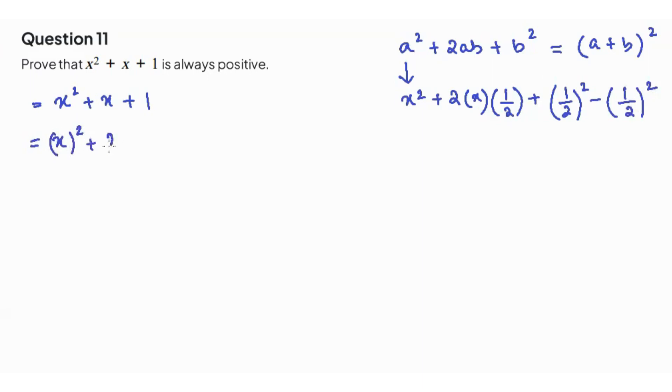Now x square plus 2 times x times 1 over 2 plus 1 over 2 whole square minus 1 over 2 whole square, and then the plus 1 comes as it is.